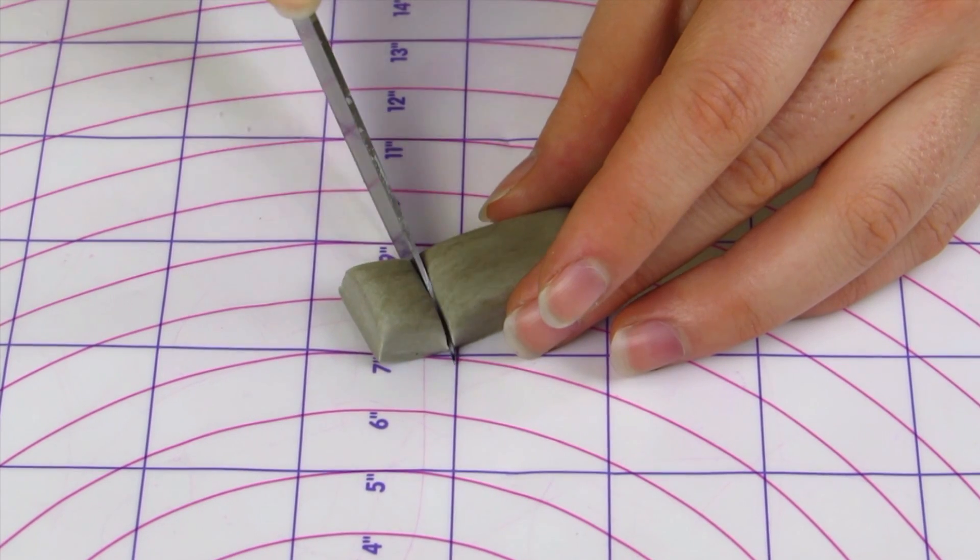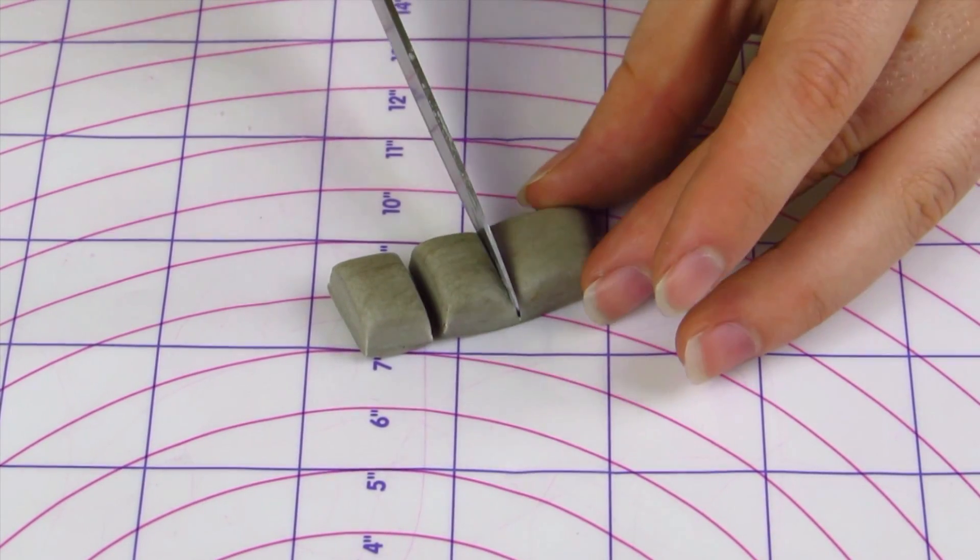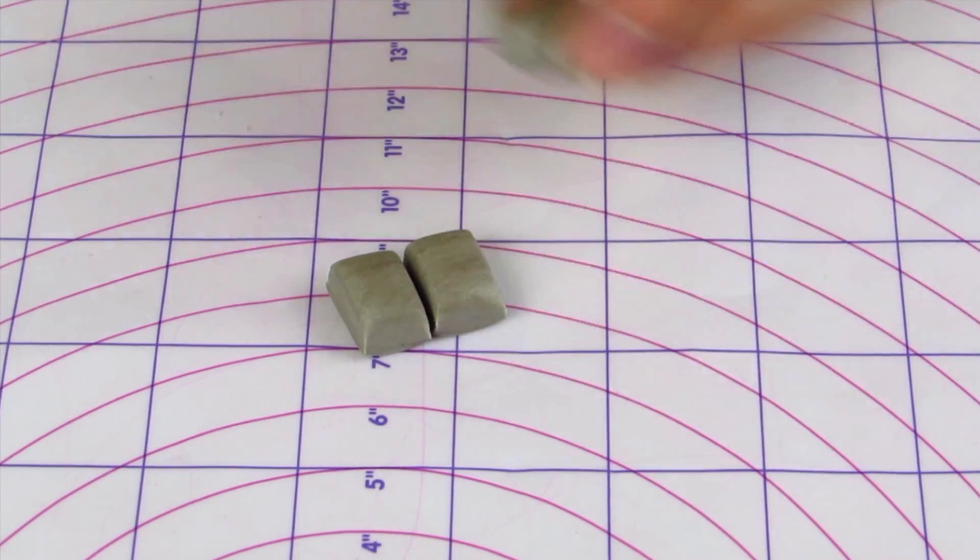Once you're done cutting out your rectangle you just want to soften up the edges using your fingers just so there's no harsh lines and it just looks nice and smooth.